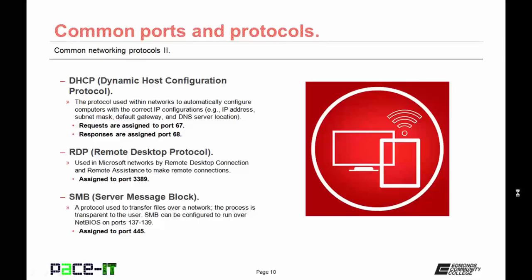Last up we have SMB or Server Message Block. It's a protocol used to transfer files over a network — the process is transparent to the user; the user never sees SMB. SMB can be configured to run over NetBIOS on ports 137 through 139, but by default SMB is assigned to port 445.